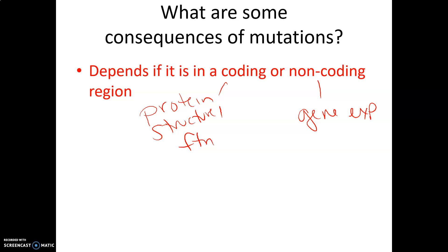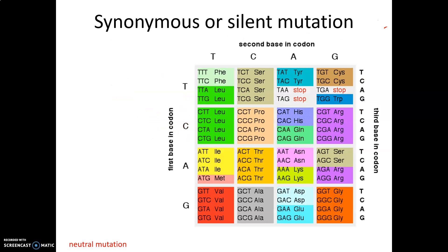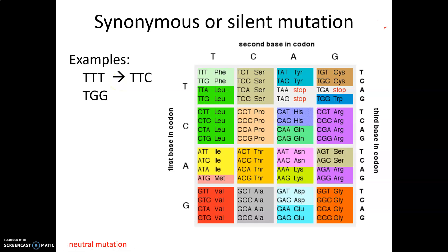If a mutation falls in a coding sequence, it can have an effect on our protein structure and function. If it falls in a non-coding sequence, it can affect gene expression. A silent or synonymous mutation means we change one codon for a synonymous codon encoding the same amino acid. For example, TTT (phenylalanine) becomes TTC, which is still phenylalanine. Remember the wobble base — the code is degenerate because of these synonymous codons. If a mutation occurs in the third base pair, chances are it wouldn't have an effect.